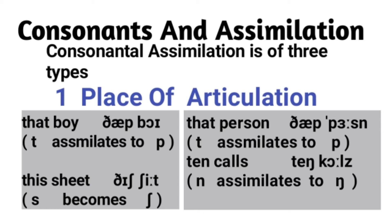Consider the fourth example: 'this sheet.' But in rapid speech, casual speech, or connected speech, it will become 'thish sheet.' What happens here is that S becomes SH — again, an assimilation of place of articulation.